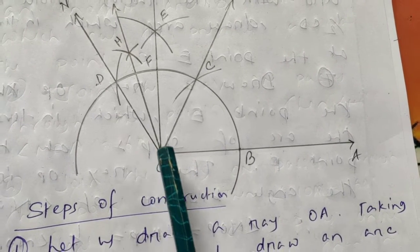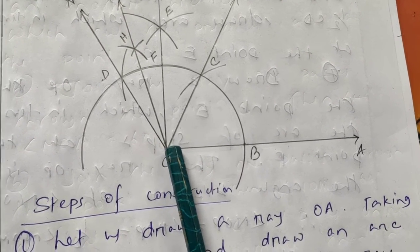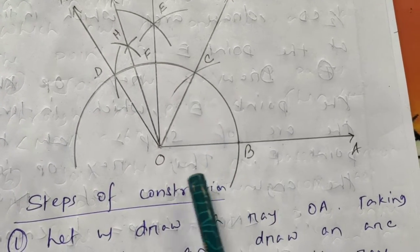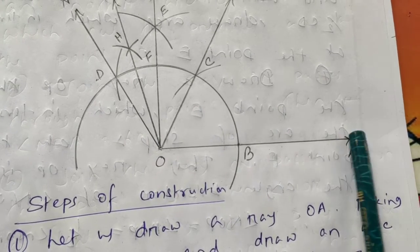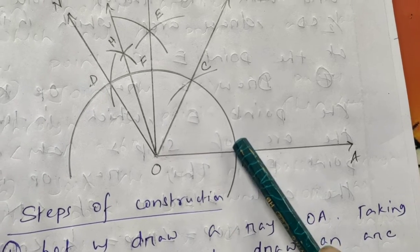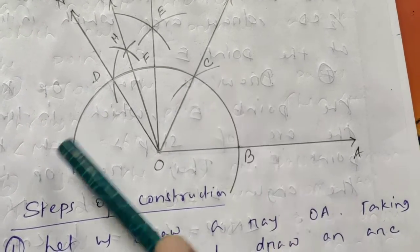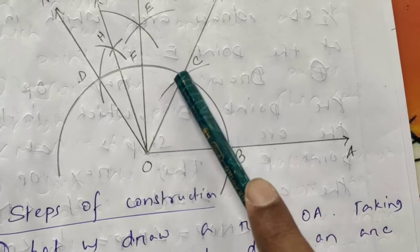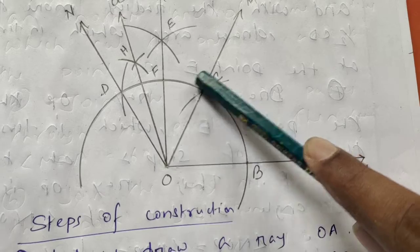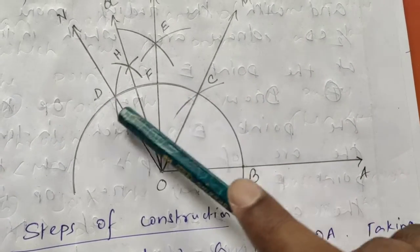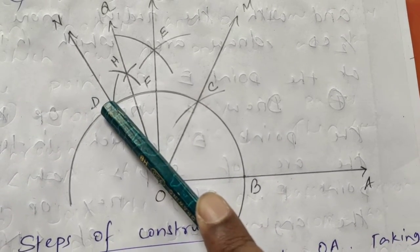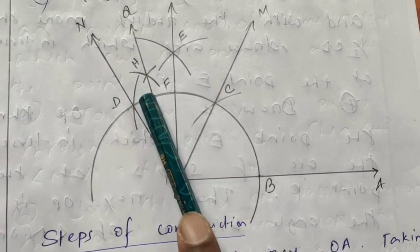To summarize steps one through three: draw ray OA, take O as center with any radius and draw an arc cutting ray OA at point B. Then from B with the same radius draw an arc cutting the previous arc at C. Then from C with the same radius draw an arc cutting the step-one arc at D.